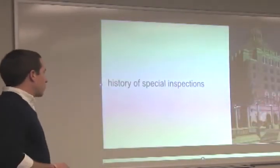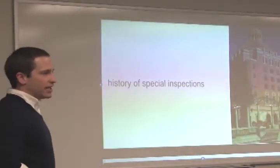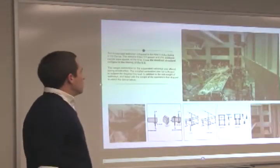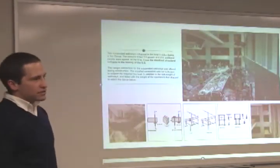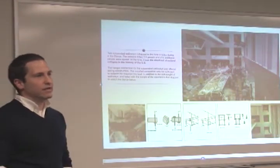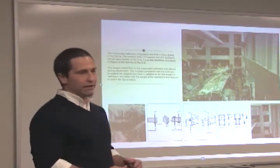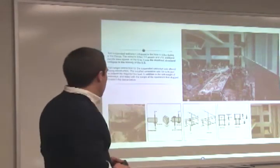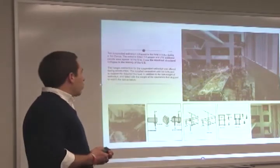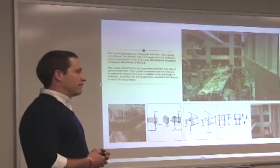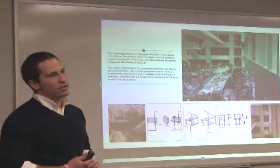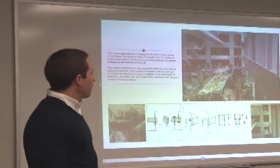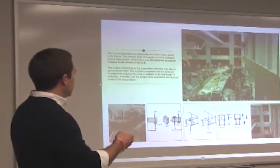Let's talk about the history of special inspections — how did we actually get applied and special inspections happening? You may know a couple of these projects. The Hyatt Regency, Kansas City, Missouri, 1981 — a very famous, unfortunately infamous, structural failure. There were a couple of elevated walkways that were suspended: the fourth floor and second floor walkways, with a third floor offset on the other side overlooking the lobby.